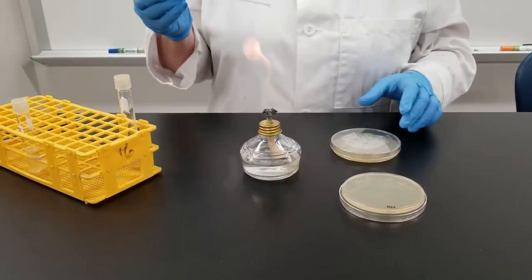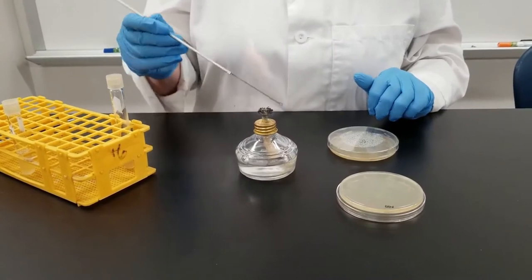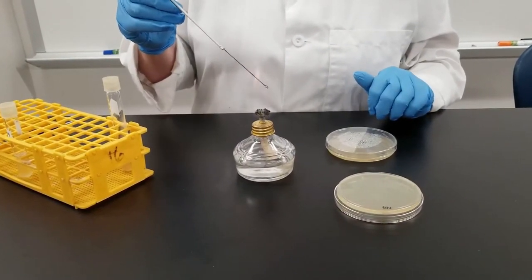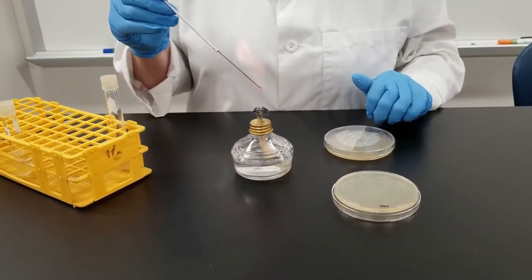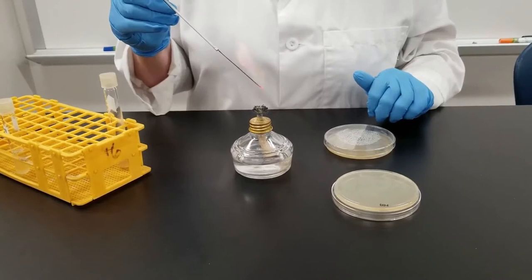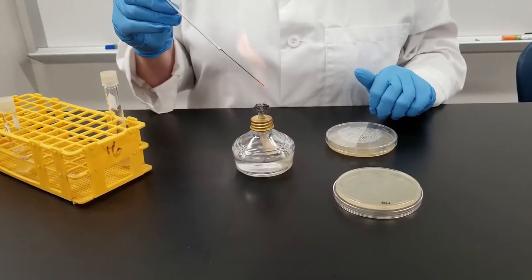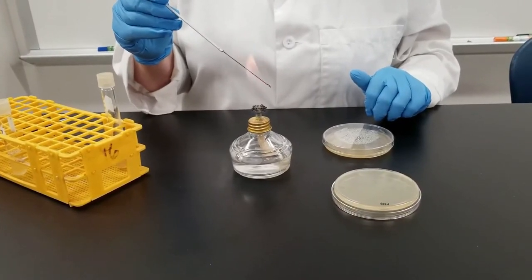What you need to do to start off with is take your inoculating loop. In this case, we are using the loop. You need to stick it into the flame. This is an incineration. It is a way of sterilizing that loop. You're literally burning everything off. You want to get it where it's glowing nice and red that kills everything that has been on this loop.